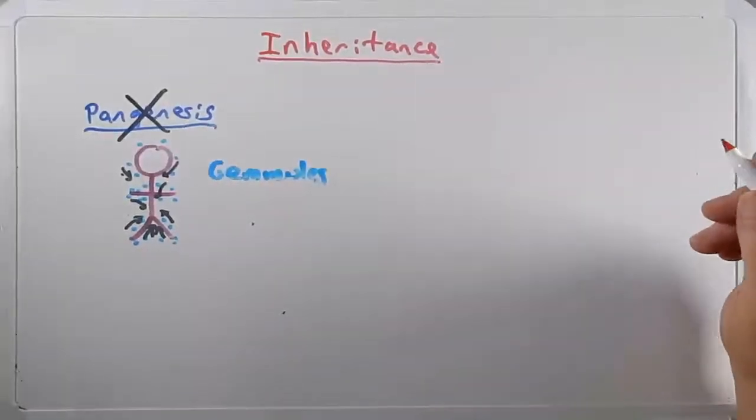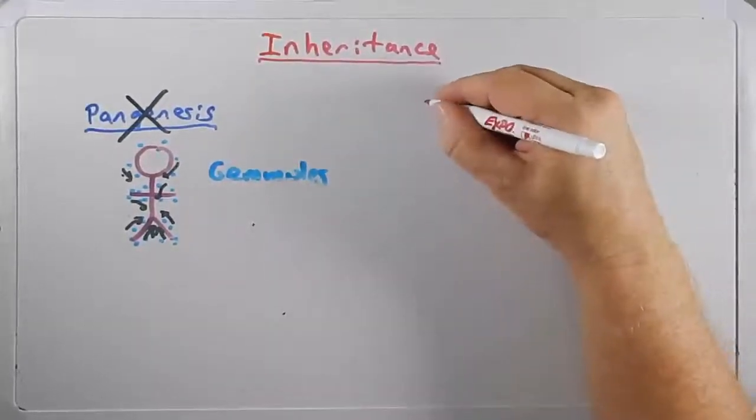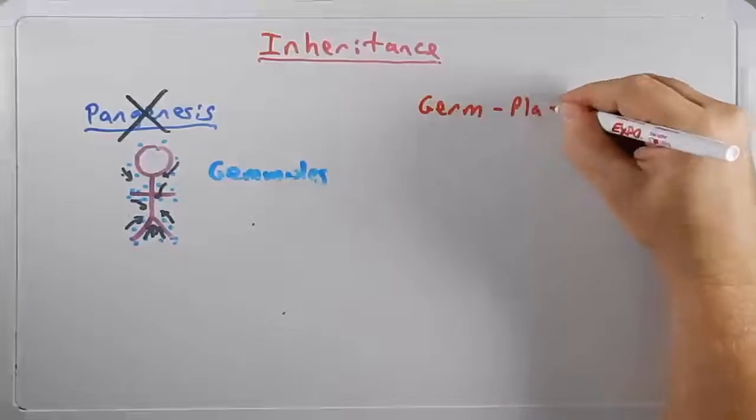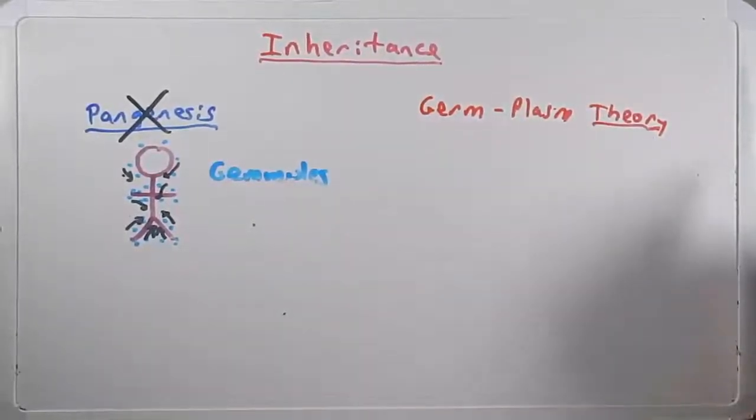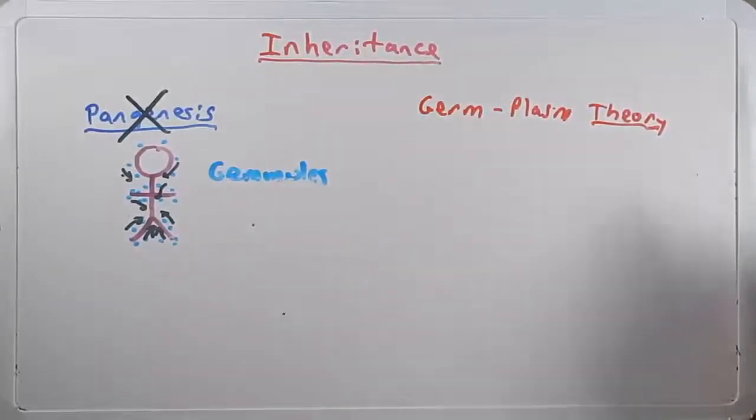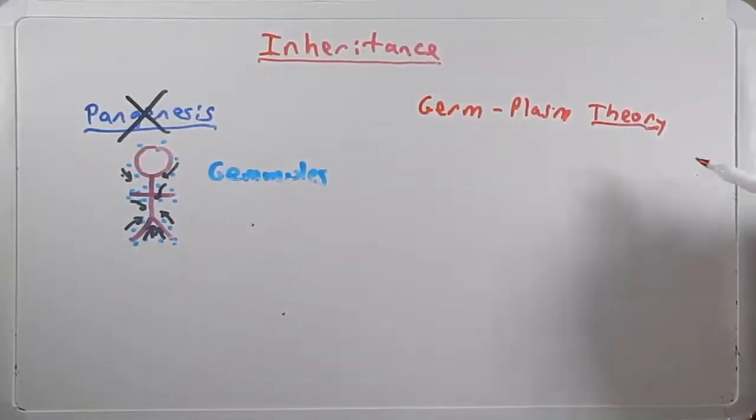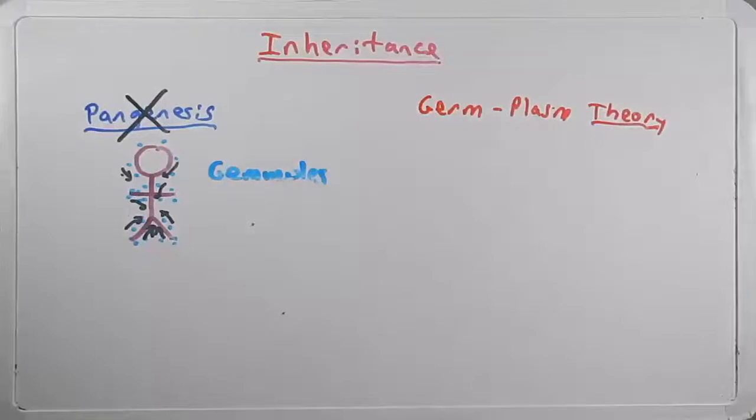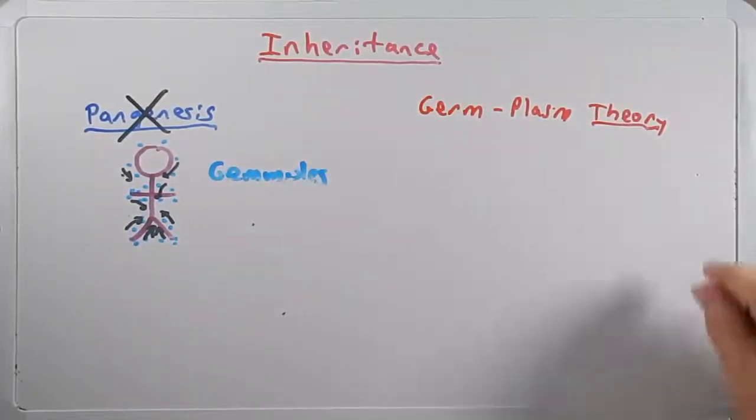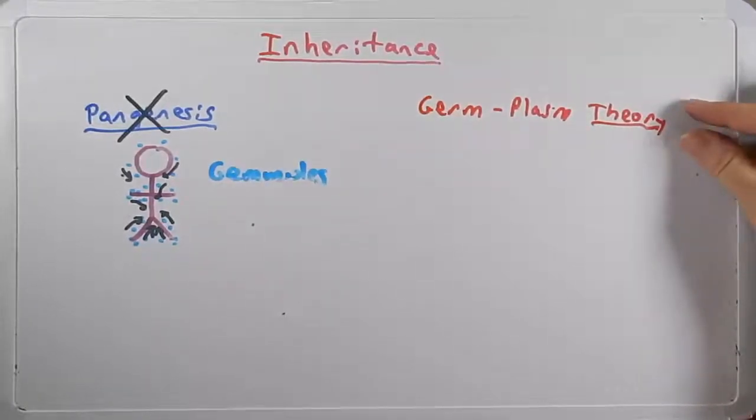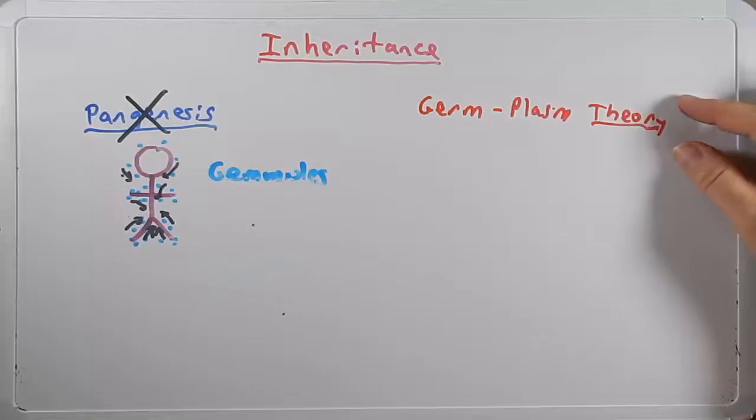Now our current model of inheritance requires this theory called the germplasm theory. We call it a theory because the word theory in science means that there's a large body, a large collection of evidence from multiple disciplines over a long period of time that supports this. Sometimes the word theory gets thrown around in the media or just in our everyday speaking to mean something that is not very strong.